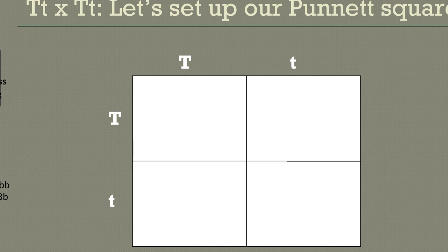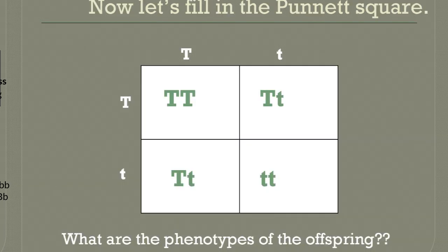Now we're going to do the same thing we did before — bring the big T down and bring the big T across. So 25% of the offspring will have big T, big T. 50% will be big T, small t — because we have big T, small t in two boxes. And then 25% will be small t, small t.